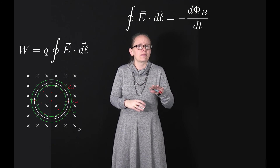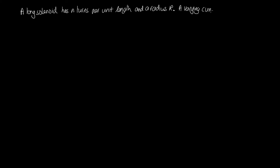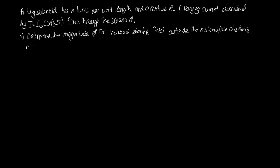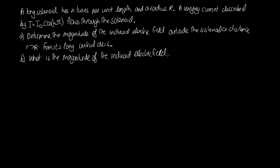Let's look at a problem we can solve using this. A long solenoid has n turns per unit length and a radius capital R. A varying current described by I = I₀ cos(ωt) flows through the solenoid. Part A: determine the magnitude of the induced electric field outside the solenoid, at a distance little r greater than capital R from its long central axis. Part B: what is the magnitude of the induced electric field inside the solenoid, at a distance little r from its axis?